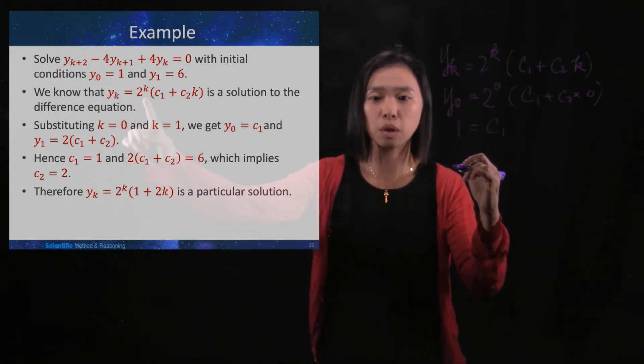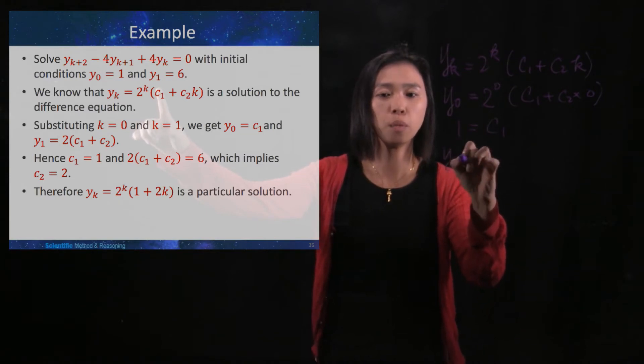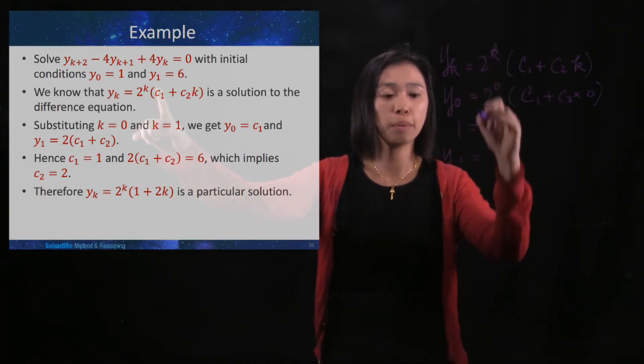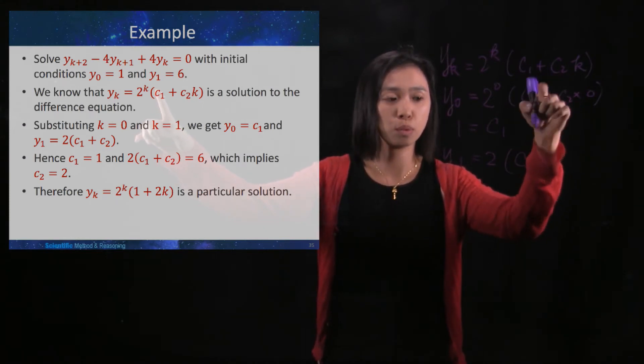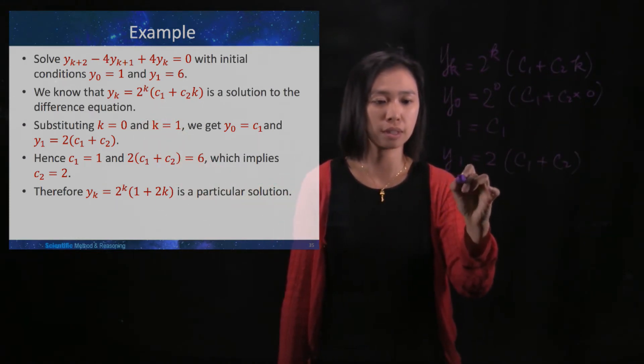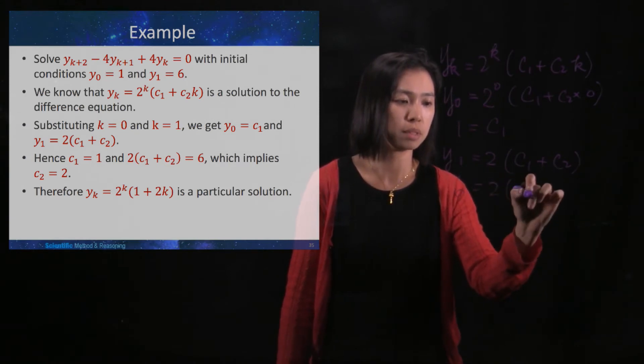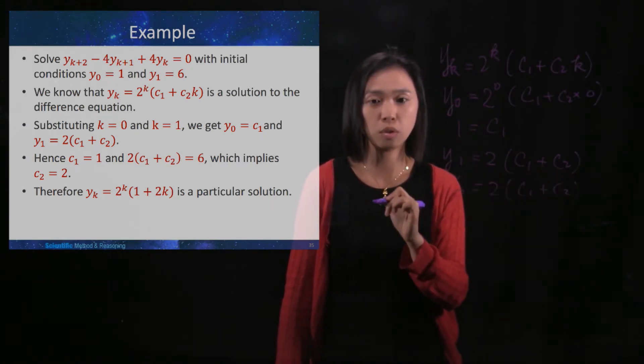And we will substitute k to be 1. So y_1 is 2^1, which is 2, times (c_1 + c_2 times 1), which is c_2. And your y_1 is 6. 6 = 2 times (c_1 + c_2).